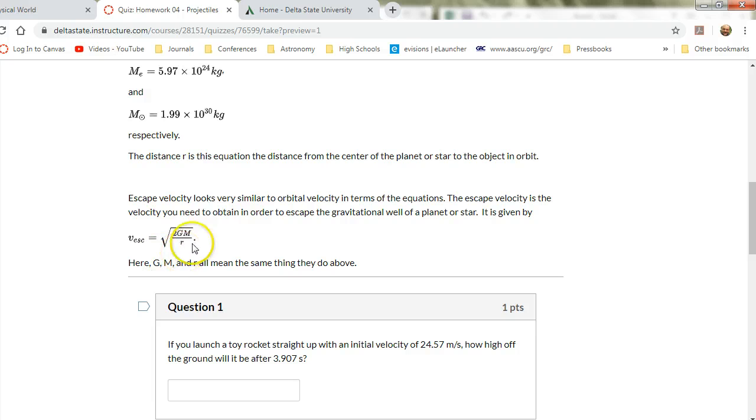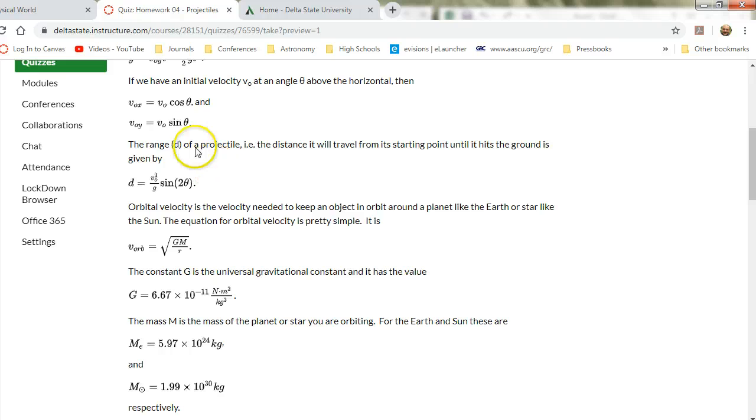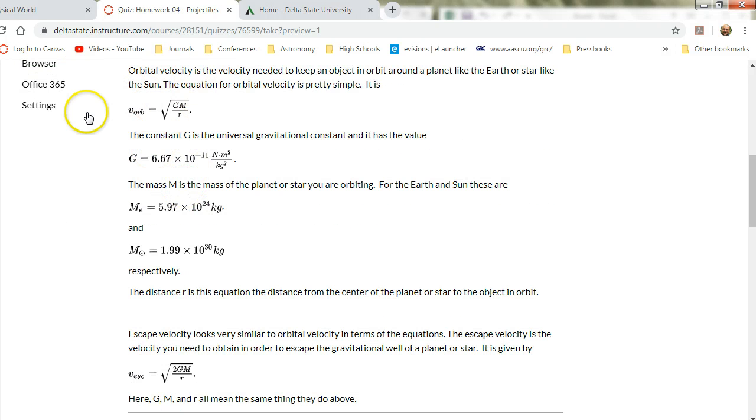The other thing is the escape velocity. So if you're sitting on the surface of a planet, a moon, or a crispy critter on the surface of a star, then this tells you how fast you have to go to completely leave the planet or moon. And so you can see it's very similar to orbital velocity, very similar to orbital velocity.